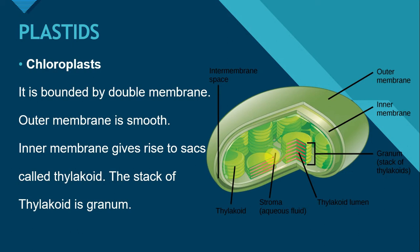The stroma contains ribosomes, proteins, and DNA. Like mitochondria, we call chloroplast a self-replicating organelle, because chloroplast does not need to depend on the nucleus's DNA to replicate — it can self-replicate using its own DNA. Due to the presence of ribosomes, it can also synthesize its own proteins. The space between the two membranes is called the inter-membrane space.